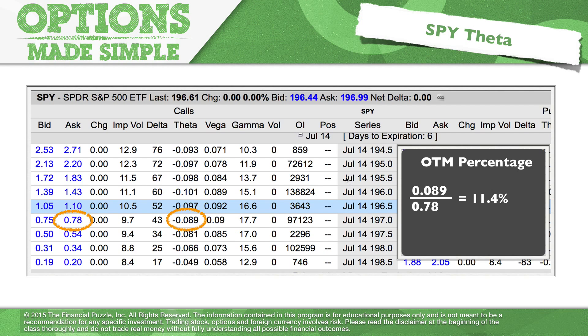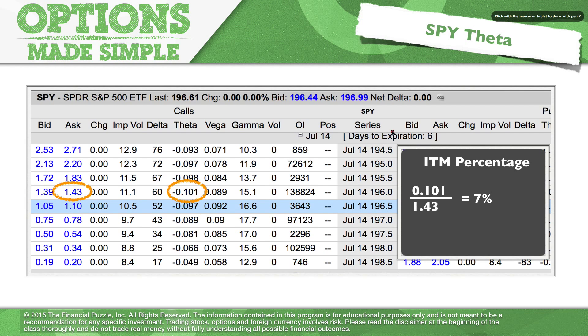That's why you got to be careful about it. And let's compare that. Let's go to one strike price in the money. That was one strike price out of the money. Let's go one in. We'll go to the 196 option. And look here, we're losing a larger dollar amount. It's penny for penny. It's a little bit more. It's 10.1 cents. But look at your option price. The price is $1.43, and percentage-wise, that's only 7 percent.